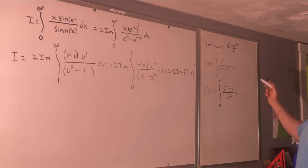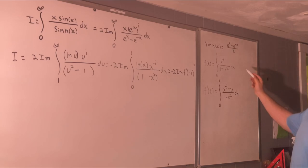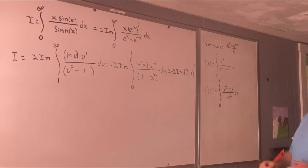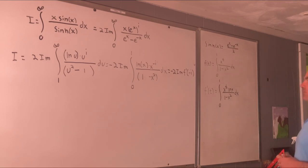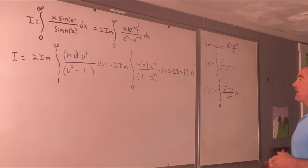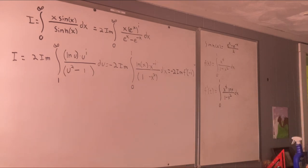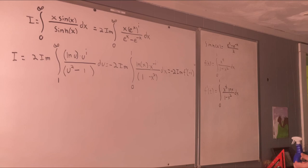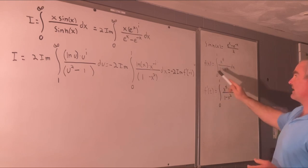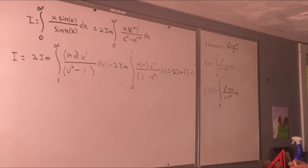Now we can kind of justify taking the derivative with respect to t since we will eventually be plugging in a purely imaginary number for t and taking its imaginary part. I'm not going to show it here, but if you do take the imaginary part of F evaluated at negative i, you do get an integral that does converge. So that's why it's kind of justified to take the derivative with respect to t — we will be plugging in negative i and taking the imaginary part of that derivative.